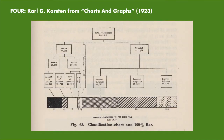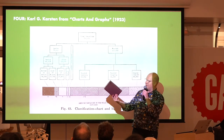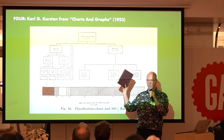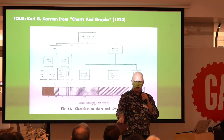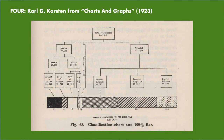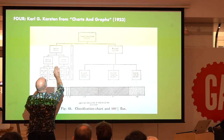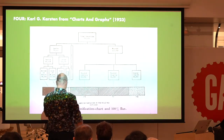My friend R.J. Andrews suggested this book to me — it's Carl G. Karsten's Charts and Graphs from 1923. I bought this book for $35. I love this one — it's such a good idea. It's effectively a kind of organization chart, a dendrogram mapped to a stackable bar. You can easily see where things are in proportion to each other and how they aggregate up. It's great.